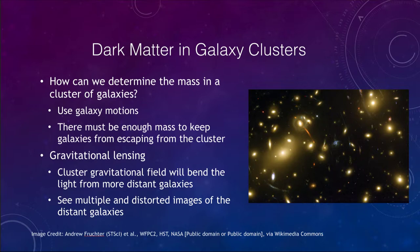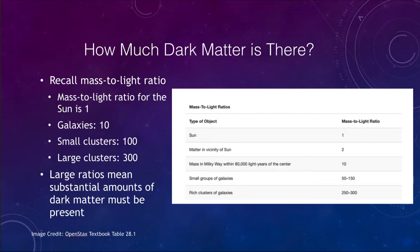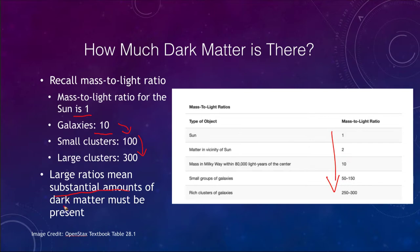So how much dark matter is there? We can look at what we call the mass-to-light ratio. The sun has a mass-to-light ratio of one, meaning a mass of one solar mass and a luminosity of one solar luminosity. Galaxies show a mass-to-light ratio of 10, meaning they have 10 times the amount of mass for each luminosity unit. As we get into small clusters and then large clusters, the mass-to-light ratio increases significantly. A ratio of 300 is what we see for some of the really big galaxy clusters.